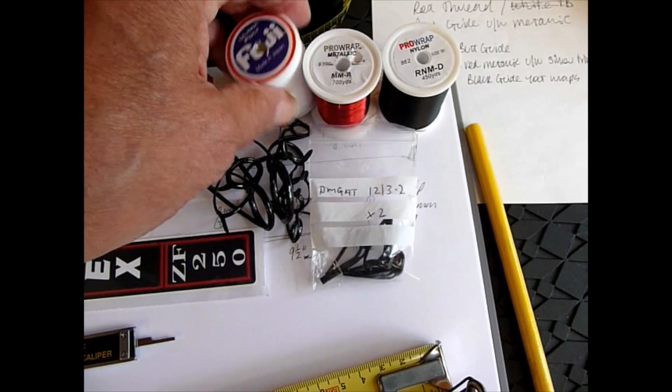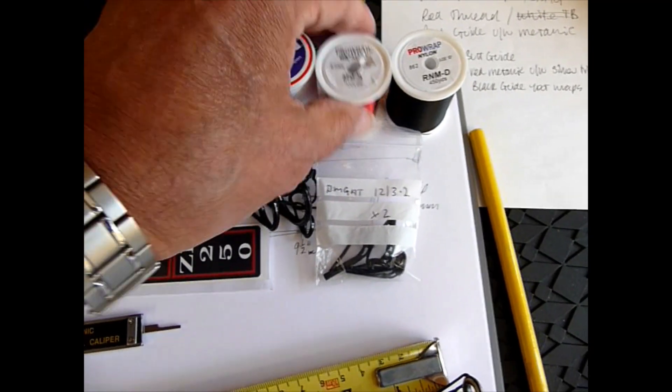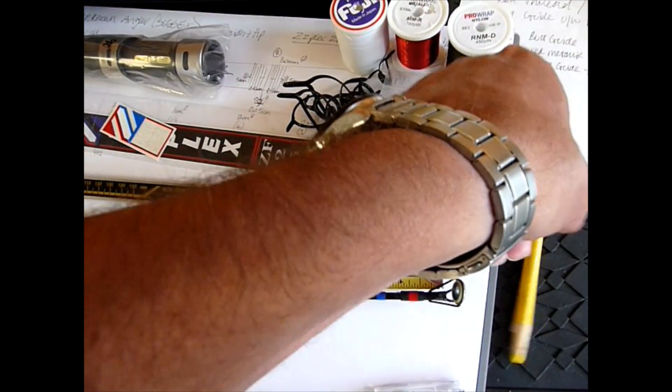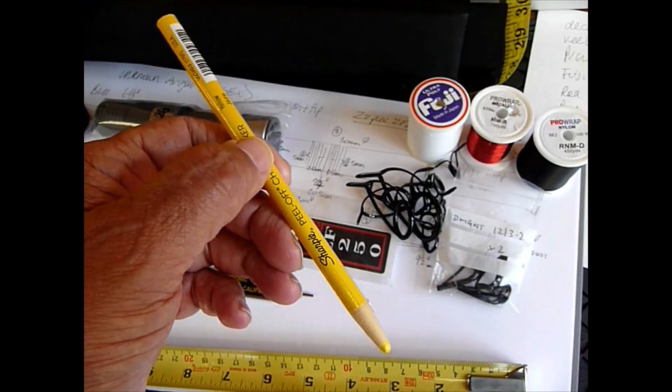The trim bands are going to be the Fuji grade A, the NOCP version. There's all the components that you need to start your rod building.